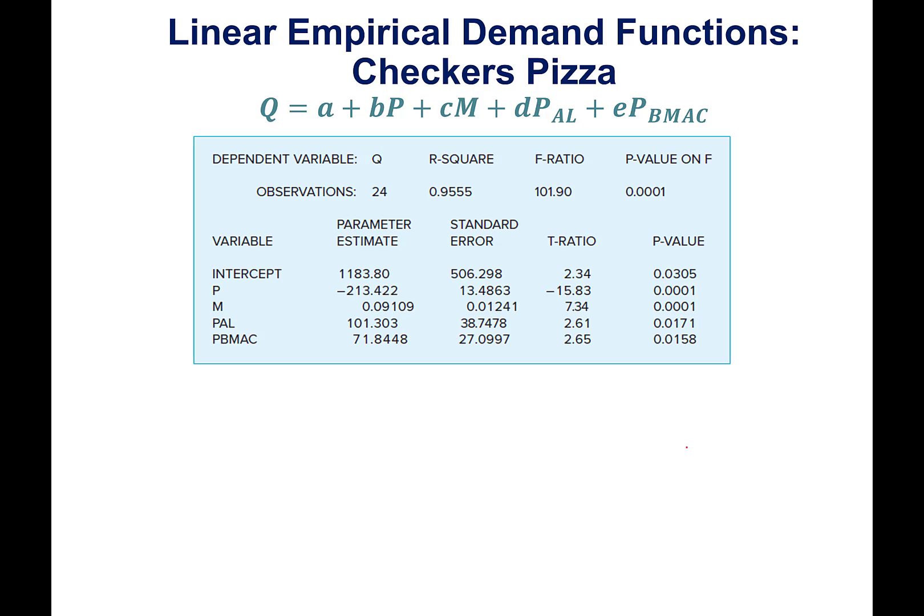So if we run this regression, these are the results we're given. Let's interpret the parameter estimates. The intercept is A-hat. B-hat: price goes up by one dollar, sales go down by 213 units. C-hat: incomes go up by one dollar, sales go up—this is a normal good. D-hat: if the price of Al's pizza goes up, sales go up by 101, so they're good substitutes. E-hat: if the price of Big Mac goes up by one dollar, sales go up by 71 dollars.